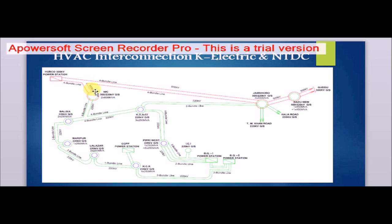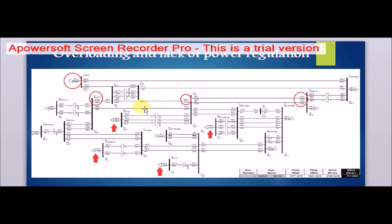Here is a geographical diagram of our system. This is the NTDC utility, which is connected to the national grid and connected to the K-Electric utility through two buses: one is the NKI junction and the other is the Jamshore junction. The problem with this existing system is the lack of power regulation, which is shown in this single line diagram.